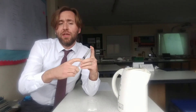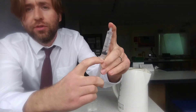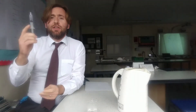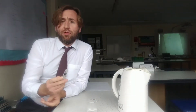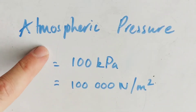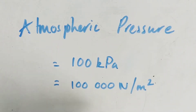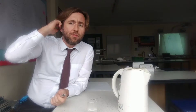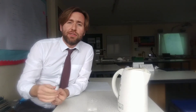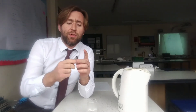The boiling point of water is a hundred degrees Celsius — well, no. The boiling point of water is a hundred degrees Celsius at sea level, at atmospheric pressure, which is a hundred kilopascals, which is a hundred thousand Newtons per square meter. So it's actually a pretty high pressure — a hundred thousand Newtons on every single square meter of area.